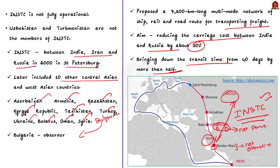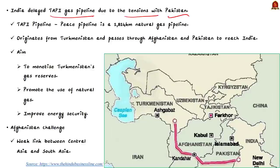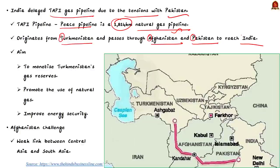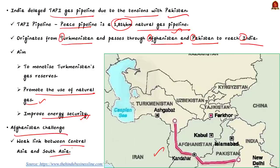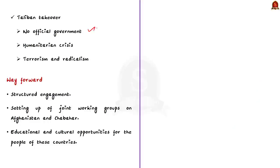The third challenge is India's delayed TAPI gas pipeline due to tensions with Pakistan. The TAPI pipeline, also called the Peace Pipeline, is a 1,814-kilometer natural gas pipeline originating from Turkmenistan, passing through Afghanistan and Pakistan to reach India, aimed at monetizing Turkmenistan's gas reserves and improving energy security. The fourth and final challenge is Afghanistan — it is becoming a weak link between Central Asia and South Asia after the Taliban took over, with no official government, a building humanitarian crisis, and worries of terrorism and radicalism spreading across its boundaries.